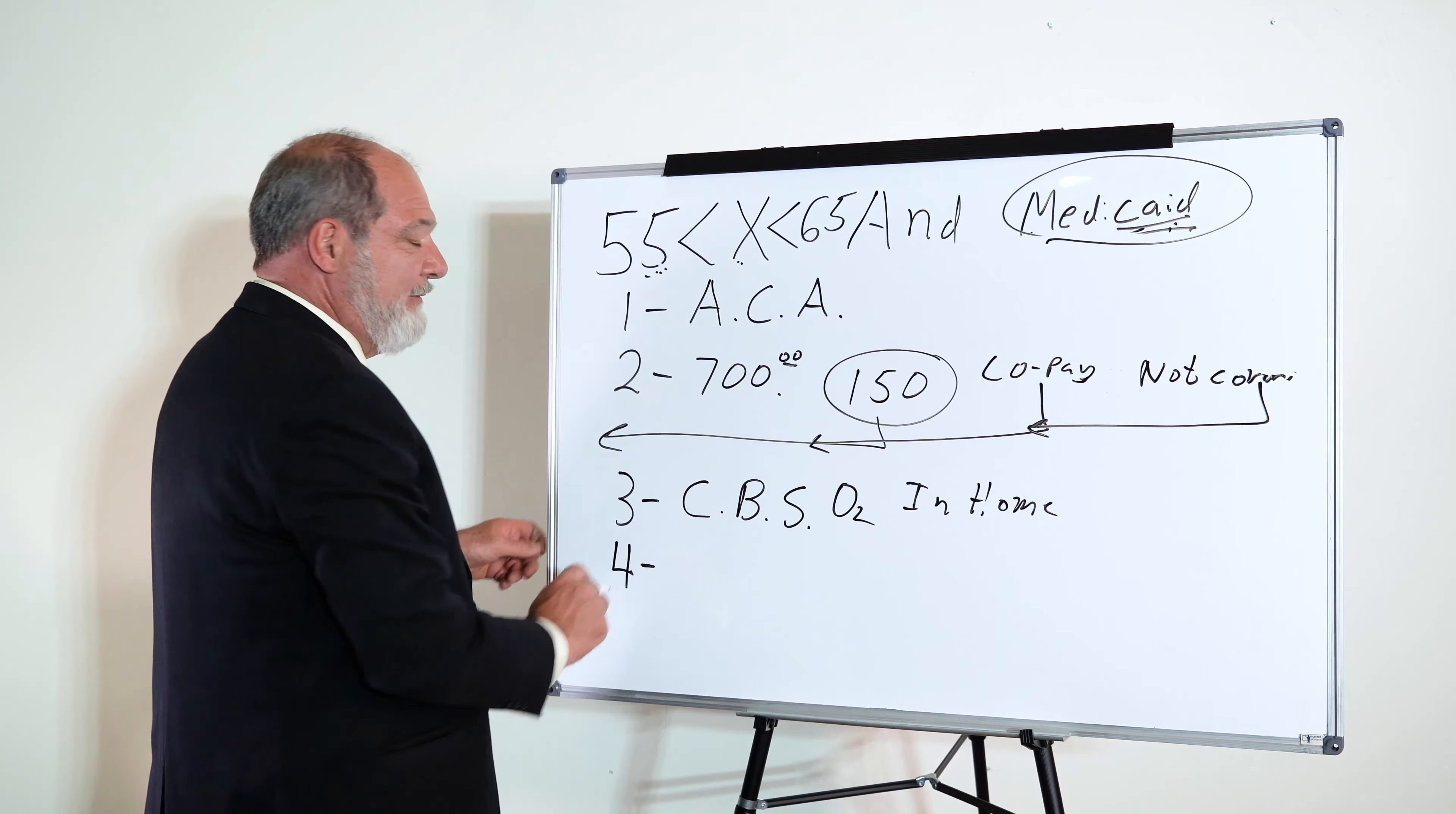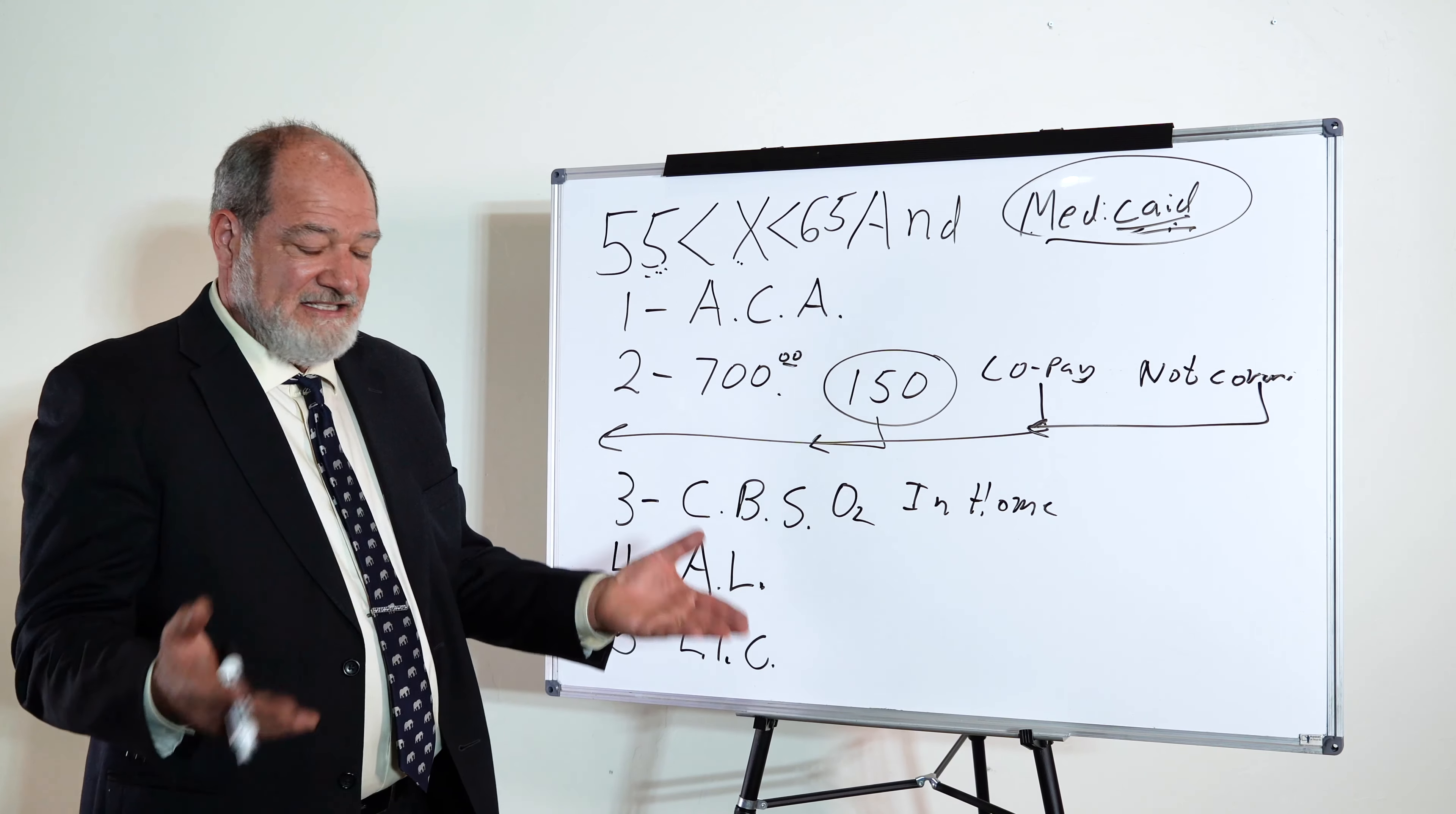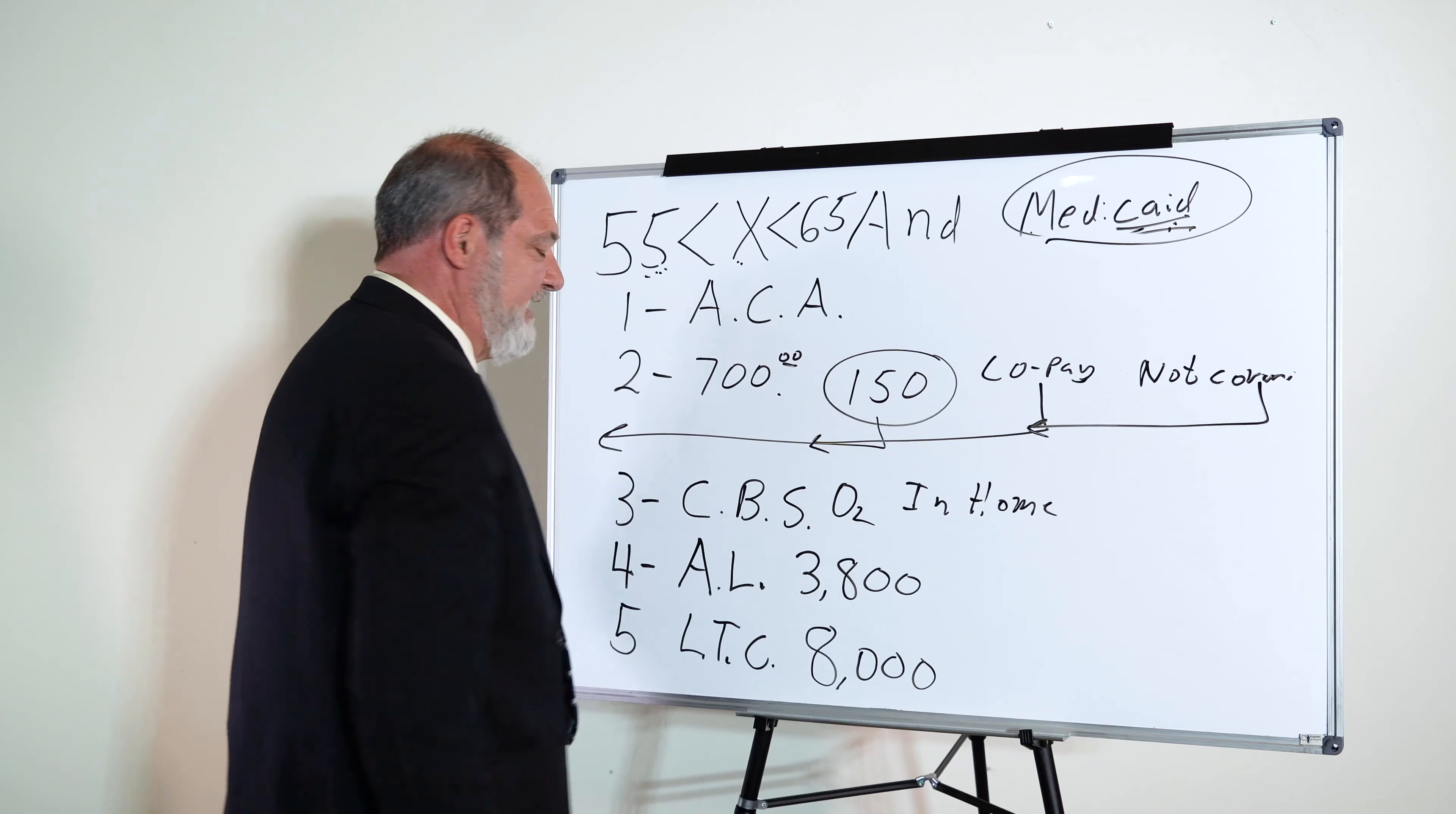The next way that the camel gets his nose under the tent is assisted living. Assisted living as opposed to the fifth way, which is long-term care. What's the difference? Long-term care is basically full-blown nursing home, skilled nursing facility. Assisted living is an assisted living facility. You're still living on your own, but it's assisted. Assisted living here this year in North Idaho is costing about $3,800 a month, whereas the extended care facility, the nursing home in town, costs $8,000 a month.